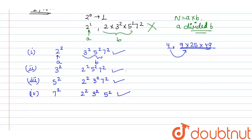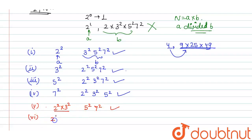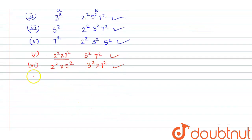Now taking combined cases: 2² × 3² as one factor, remaining is 5² × 7² — this is a valid co-prime case. Next, 2² × 5² as one factor, remaining is 3² × 7² — also co-prime and valid. Seventh case: 2² × 7² as one factor, remaining is 3² × 5² — this is also correct.